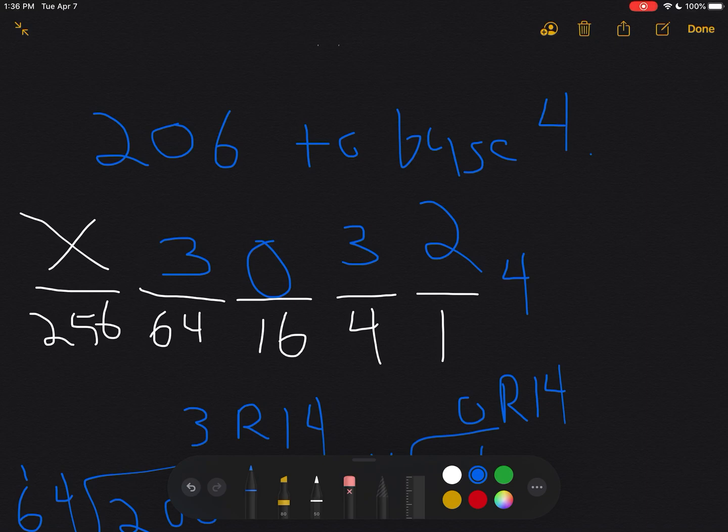So 206 should be 3032 base four. And I can do a quick check: two times one is two, three times four is 12, zero times 16 is zero, three times 64 is 192, plus 12 is 204, plus two is 206. So by converting that back into base 10, I see that my solution is correct.